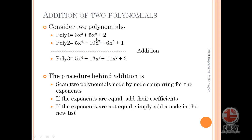Similarly, we have 5x squared and 6x squared, so we add 5 plus 6 which becomes 11x squared. And similarly, 2 plus 1 is 3. We will scan two polynomials node by node comparing the exponents. If the exponents are equal, we will add the coefficients. If the exponents are not equal, we will simply add a node in the new polynomial. It is a simple mathematical concept.